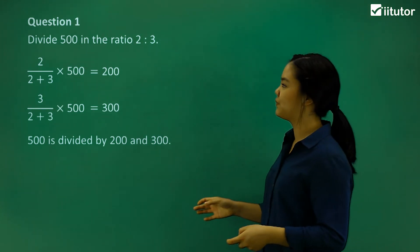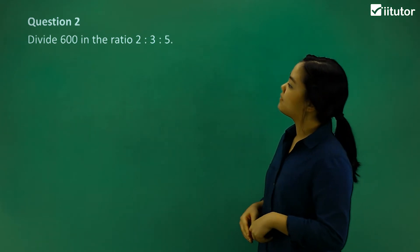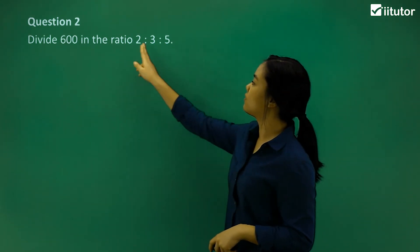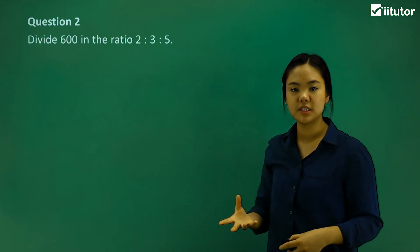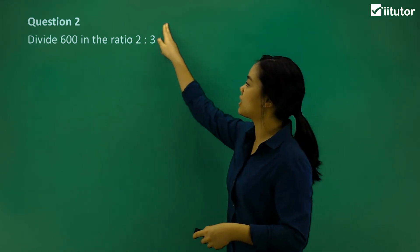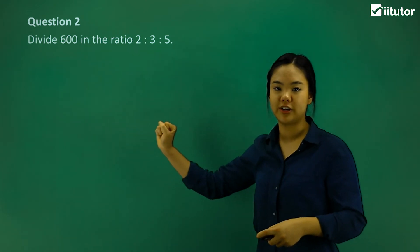Okay, so let's do question two. It says divide 600 in the ratio of 2 to 3 to 5. Okay, so it's similar to question one. This ratio makes up the 600.